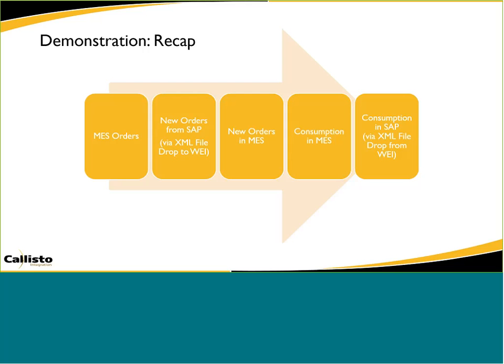Proof is in the pudding — let's go through a demonstration. We have an order that needs to make it to the shop floor from a planning tool. We're going to use a very simple XML file drop — basically drag and drop a file into a folder that WEI is watching. That file gets processed so the person on the shop floor can see exactly what orders need to be fulfilled. They'll work against that order to consume raw materials, and we'll send that raw material consumption back up to the planning tool so they can compare theoretical to actual.